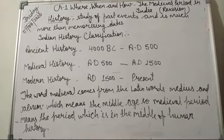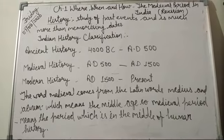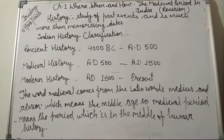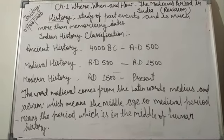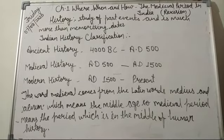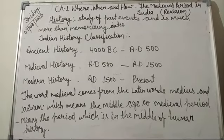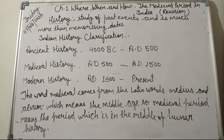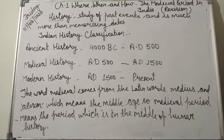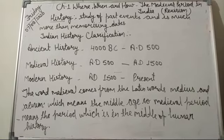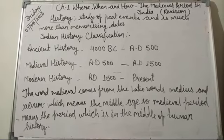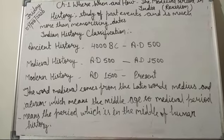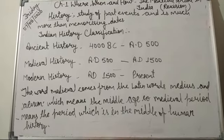Then 'Hind' or 'Indica' — all Arabian and Persian literature referred to the Indian subcontinent as Hind, and the people living here were known as Hindus. The Greeks called this land 'Indica', and most probably from this term the subcontinent got its modern name, India.